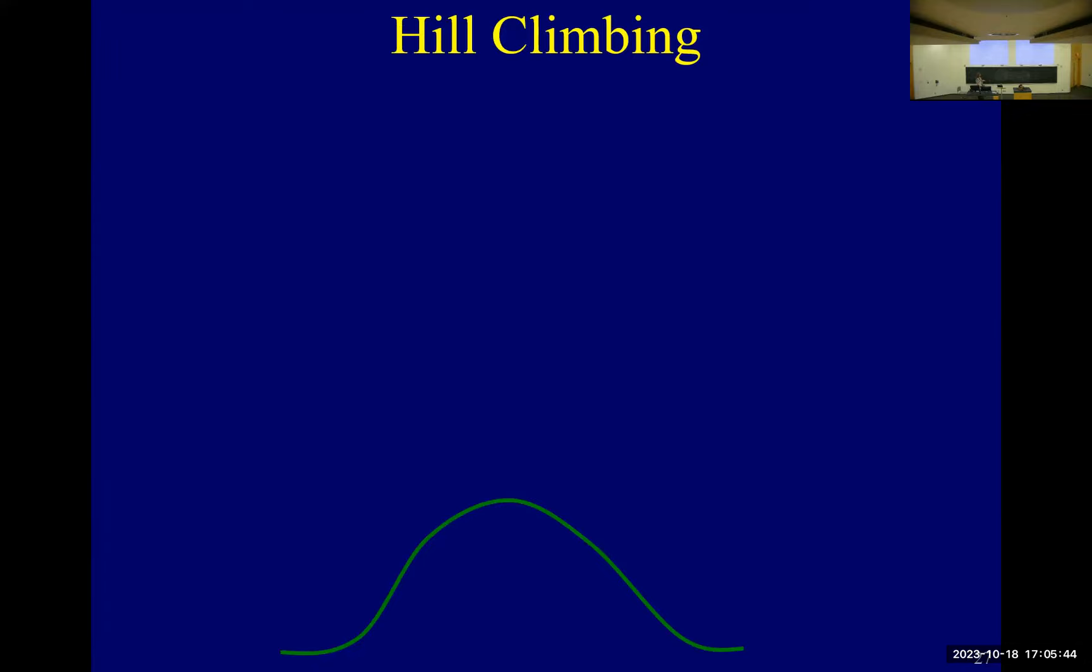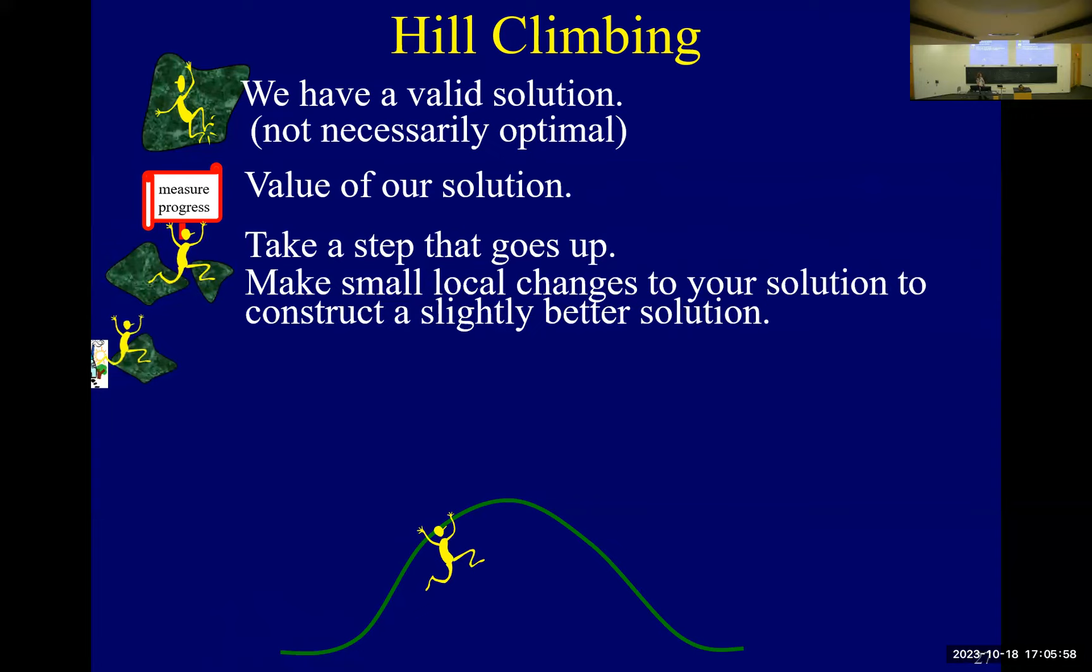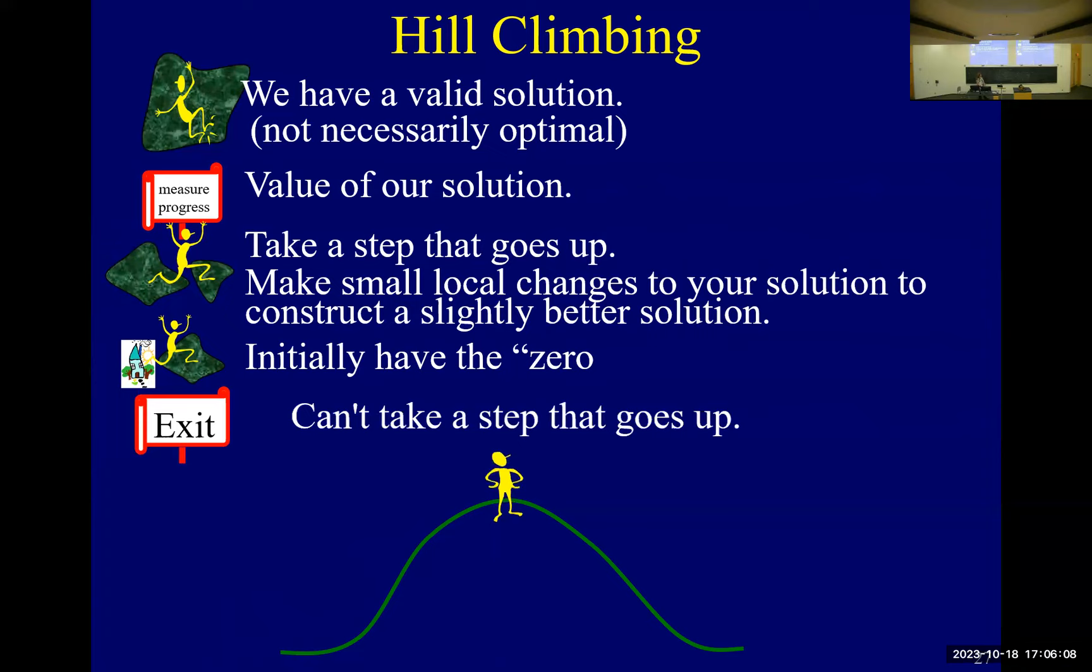So as I said, this is hill climbing, and you have a valid solution, and what you do every step is you get a better solution. Your goal is to get better solutions. And how do you start? You start with any valid solution. Maybe the zero solution is valid. And when do you stop? You stop when you can't go up anymore. Reasonable algorithm.